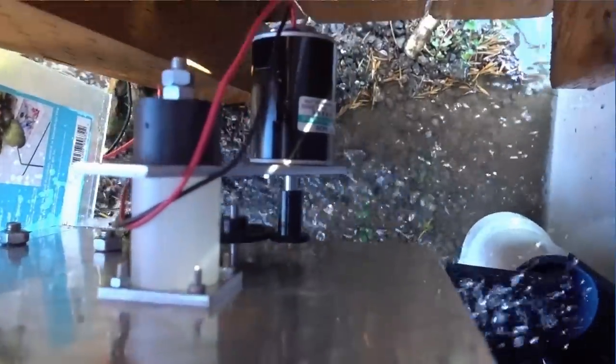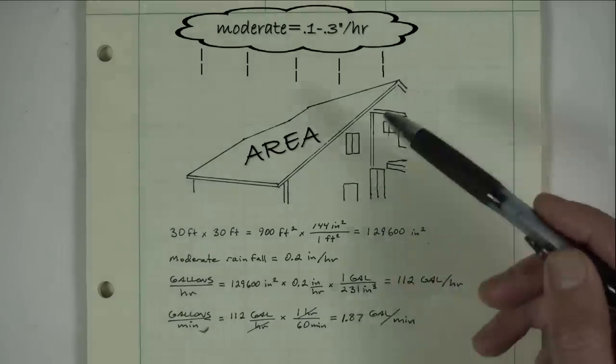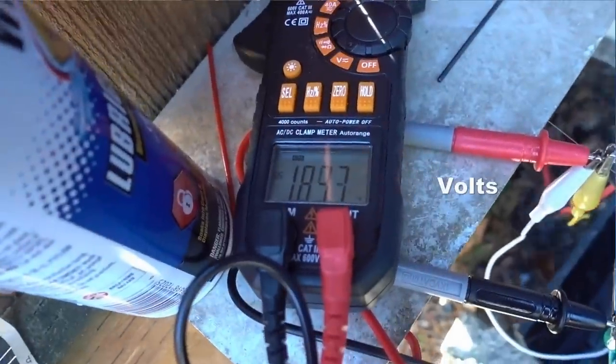In the last video we connected a DC generator to my rain gutter to produce hydroelectric power. We calculated there were two watts of power available but generated less than a quarter watt.